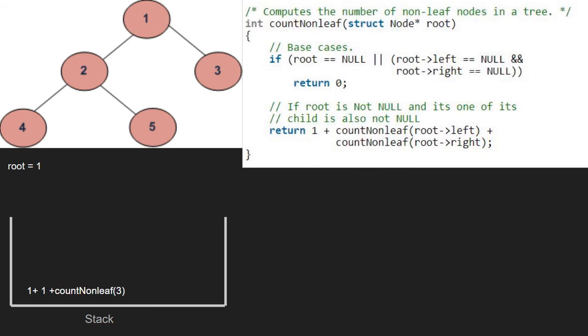Next, we pass the right child of 1 which is 3. Hence, root will point to 3.